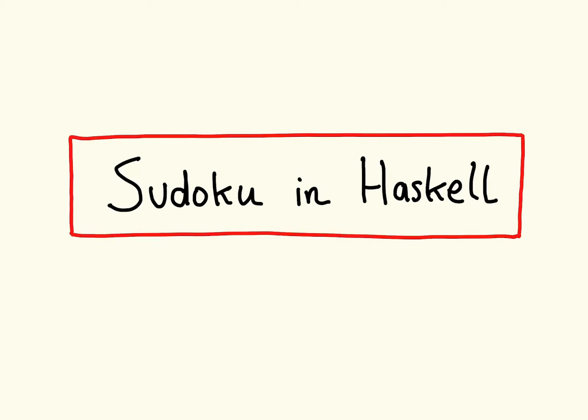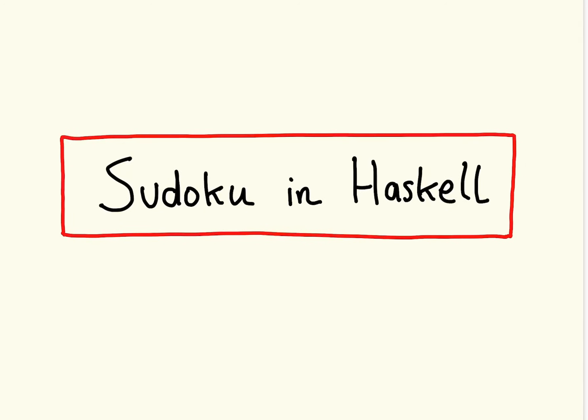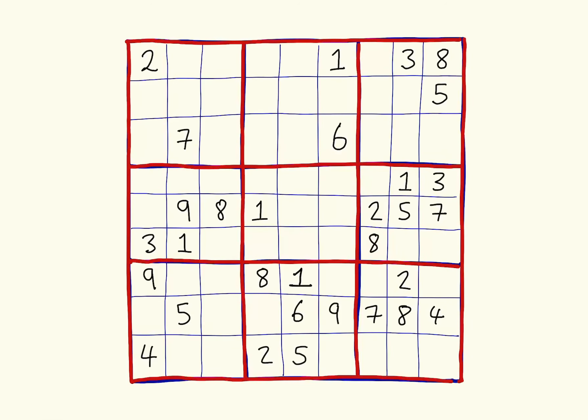What we're going to be looking at in the next two or three lectures is a simple example to get you thinking in Haskell again. The example we're going to be looking at is implementing a Sudoku solver. I'm going to do everything on my iPad from this point on in the module, and you should also think about making your own notes. All the code I'm going to be presenting is freely available on the web page for the module.